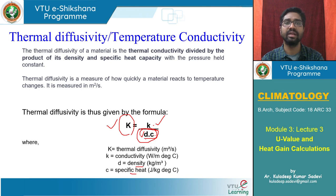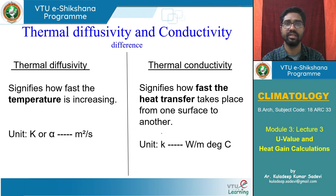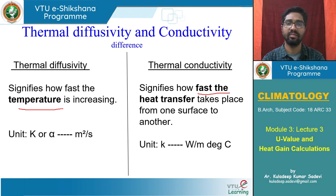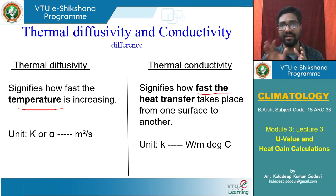The difference between thermal diffusivity and conductivity is: in conductivity we see how fast heat transfer happens, but in diffusivity we see how fast the temperature is rising or increasing. Both look very similar but there is a slight distinction — conductivity deals with heat flow, while diffusivity deals with the spread of temperature increase.